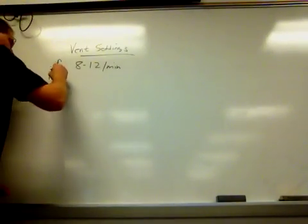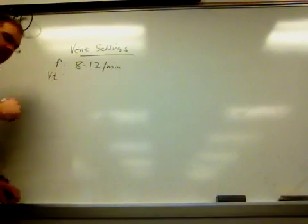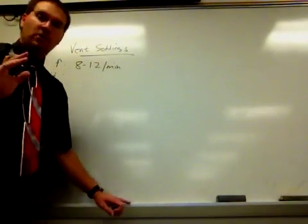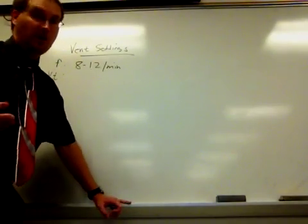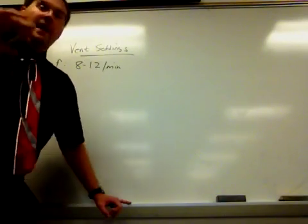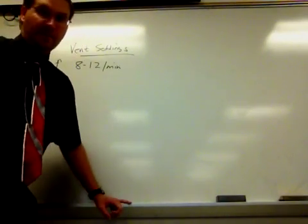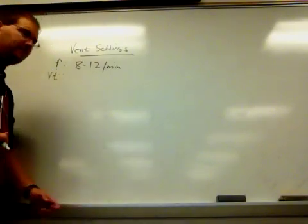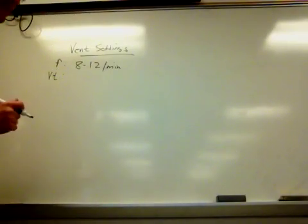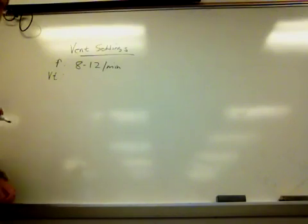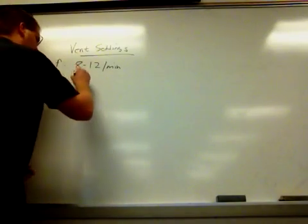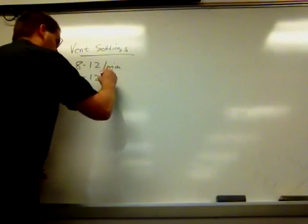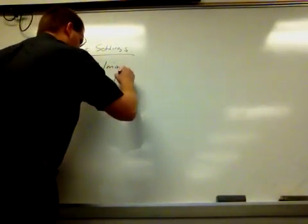Okay, next critical setting is the tidal volume, and again, generally we're going to start most of our adult patients in volume control ventilation, and then move on to things like pressure control ventilation if our patient deteriorates up to the point where we decide pressure control is needed. Okay, tidal volume, what they recommend is you start off at 8 to 12 milliliters per kilogram.